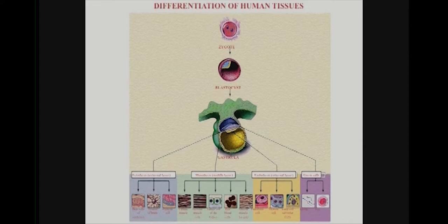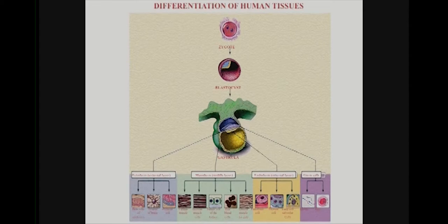Actually there's a fourth category: the germ cells, which end up forming the egg and sperm cells. Ectoderm gives rise to skin cells, neurons, and pigment cells. Mesoderm gives rise to everything in the middle — muscle, heart, cells of the kidney, blood cells, smooth muscle. Endoderm gives rise to a lot of endocrine tissue: pancreatic cells, thyroid cells. These are fundamentally different kinds of tissue, and it's pretty remarkable that a single cell can make them all.